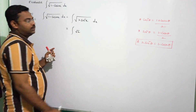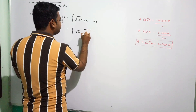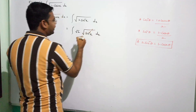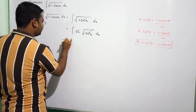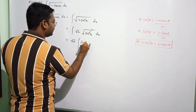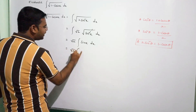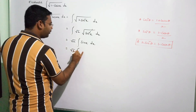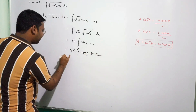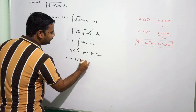Taking √2 outside as a constant, we have integral of √2 · √(sin²x) dx. The square root and square cancel, giving √2 · integral of sinx dx. Integration of sinx is −cosx.